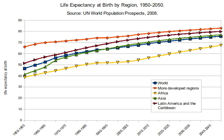The most commonly used measure of life expectancy is at birth, which can be defined in two ways. Cohort LEB is the mean length of life of an actual birth cohort and can be computed only for cohorts born many decades ago, so that all their members have died. Period LEB is the mean length of life of a hypothetical cohort assumed to be exposed, from birth through death, to the mortality rates observed at a given year. National LEB figures reported by statistical national agencies and international organizations are indeed estimates of period LEB.